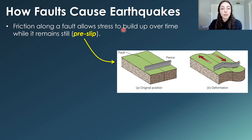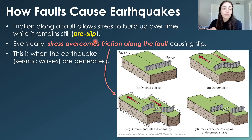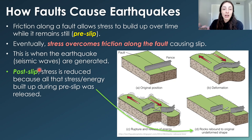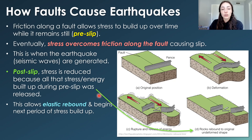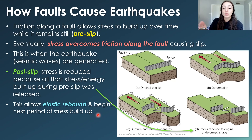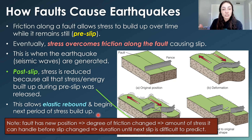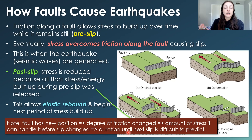Friction along the fault allows stress to build up over time — that is called the pre-slip period. Eventually stress overcomes the friction along the fault and causes slip, generating the earthquake. Post-slip, stress is reduced because all that built-up energy was released. This allows what's called elastic rebound along the fault plane, which brings it back to a stationary state and begins the next pre-slip period. Note that the fault has a new position post-slip, so the degree of friction has changed, making the duration until the next slip event very difficult to predict — one of the key reasons it's so hard to forecast fault-caused earthquakes.